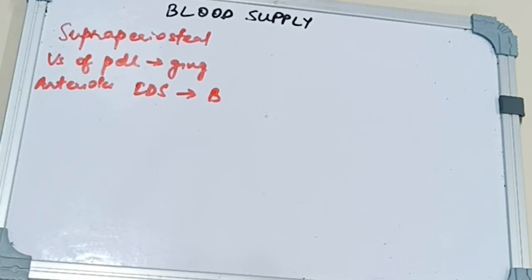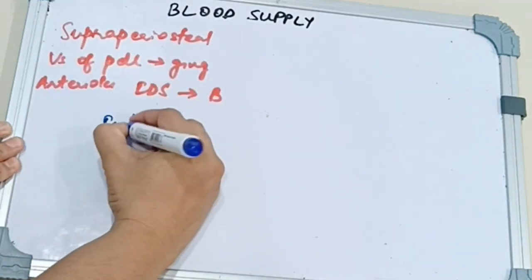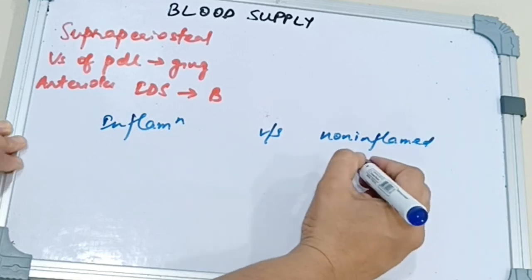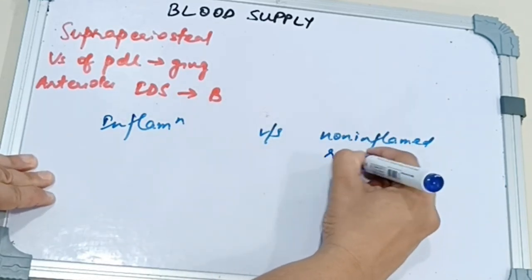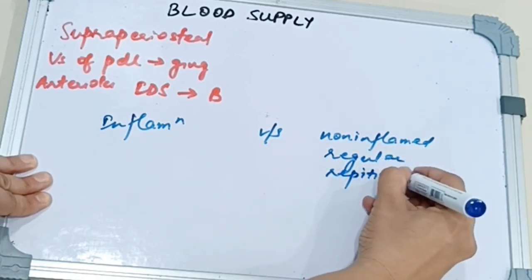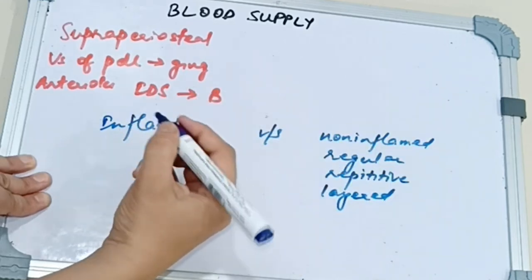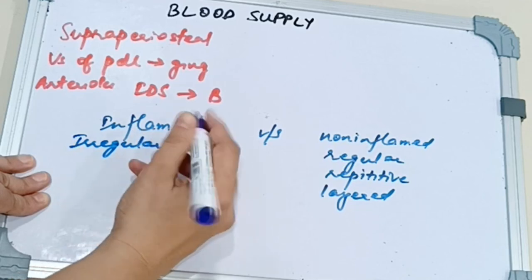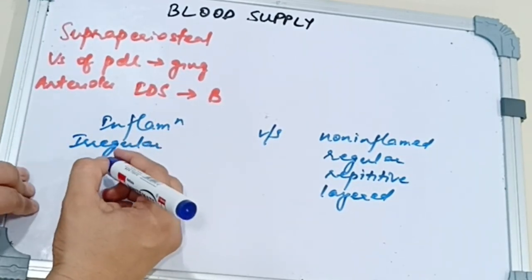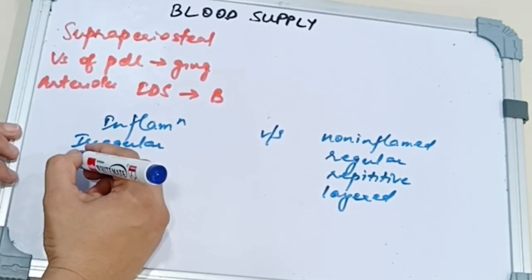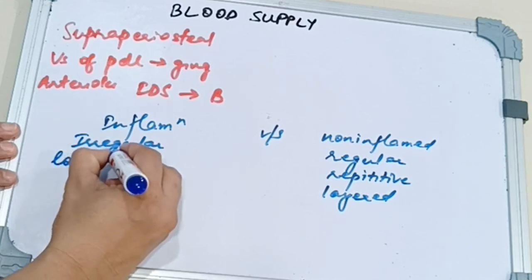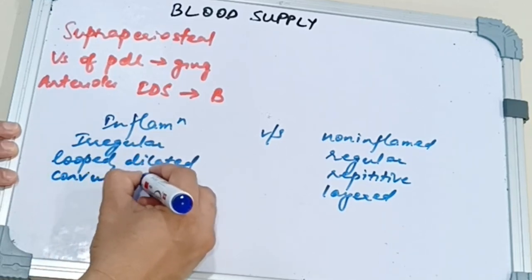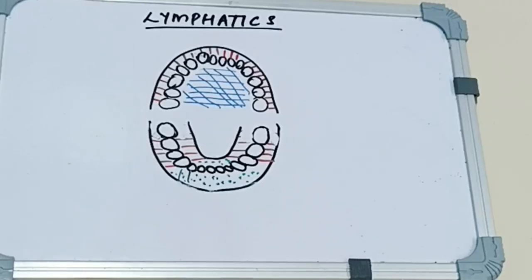Now the gingival vasculature pattern is different in case of inflammation and non-inflammation. In absence of inflammation, the vascular network is arranged in a regular, repetitive and layered pattern. Whereas when there is inflammation, what is regular in non-inflammation becomes irregular. It is all haphazard, not repetitive. There will be all the vascular patterns arranged in a haphazard manner. It can have loops, some vessels may be looped or they may be dilated with a convoluted appearance.